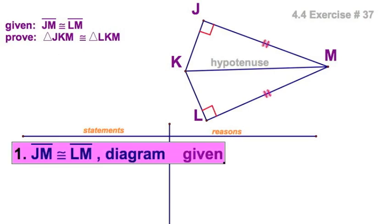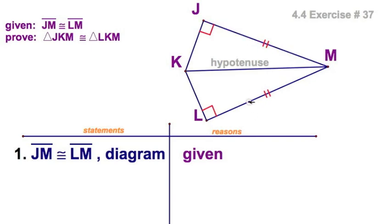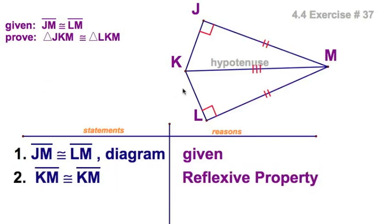Now, I'm given this. These two sides are congruent, and by the reflexive property, KM is congruent to KM. It is the hypotenuse of both of these triangles.